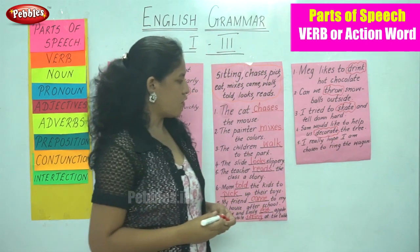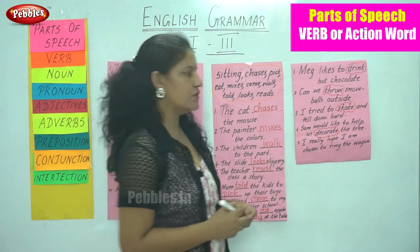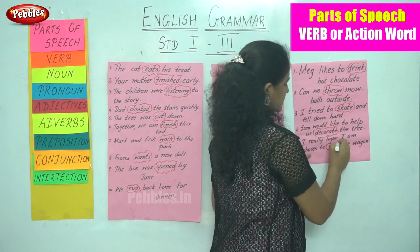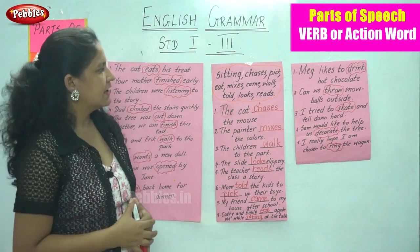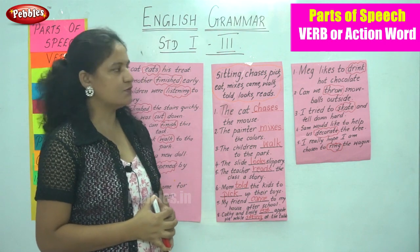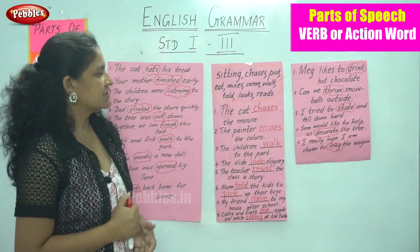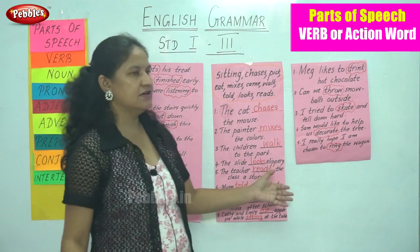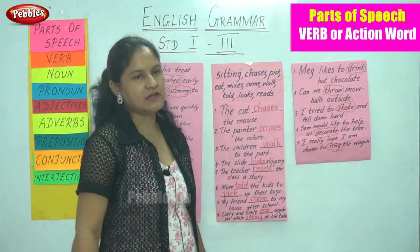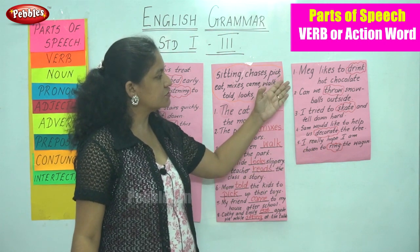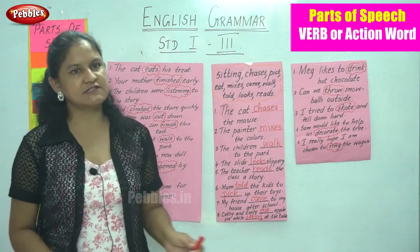'I really hope I am chosen to ring the wagon' — the verb is ring. To recap: 'Meg likes to drink hot chocolate' — drink. 'Can we throw snowballs outside?' — throw. 'I tried to skate and fell down hard' — skate. 'Sam would like to help us decorate the tree' — decorate. 'I really hope I am chosen to ring the wagon' — ring. The words drink, throw, skate, decorate, and ring are all verbs or action words in these sentences.